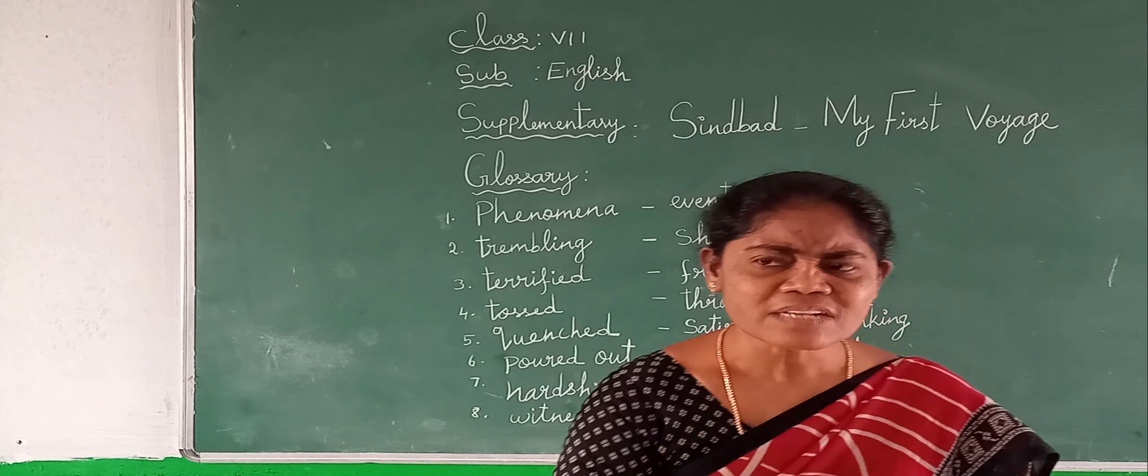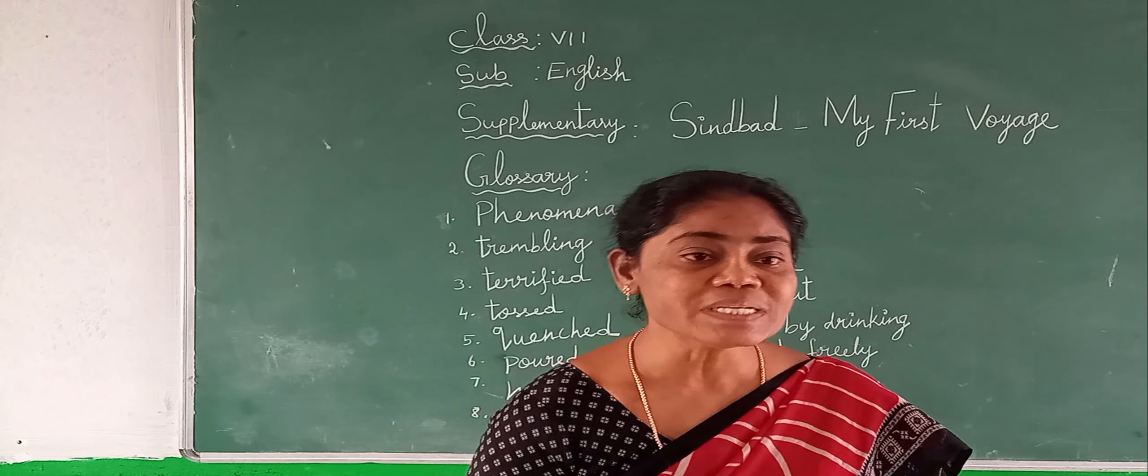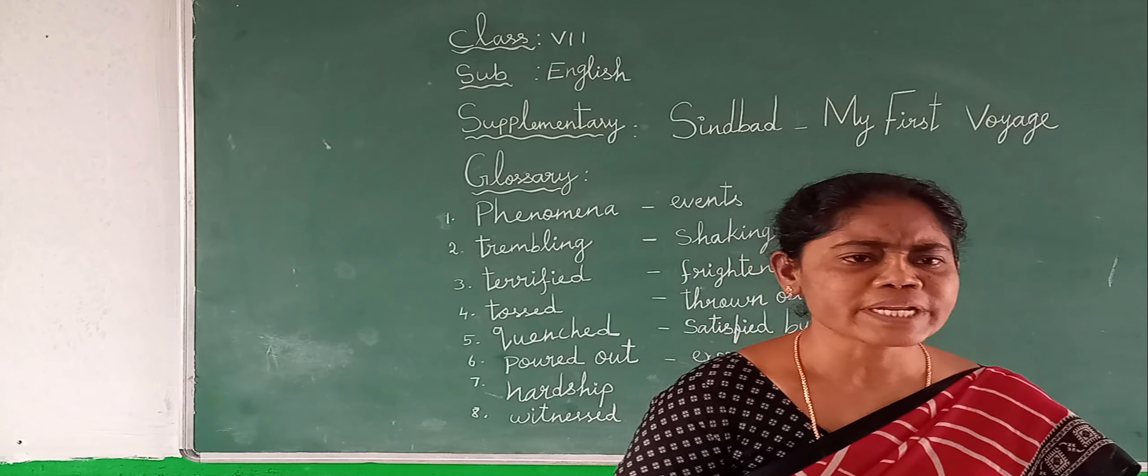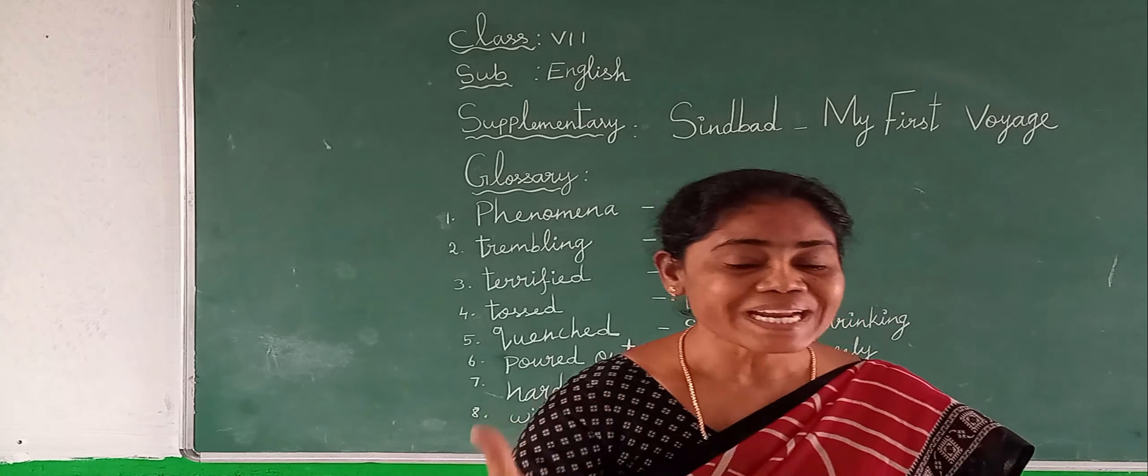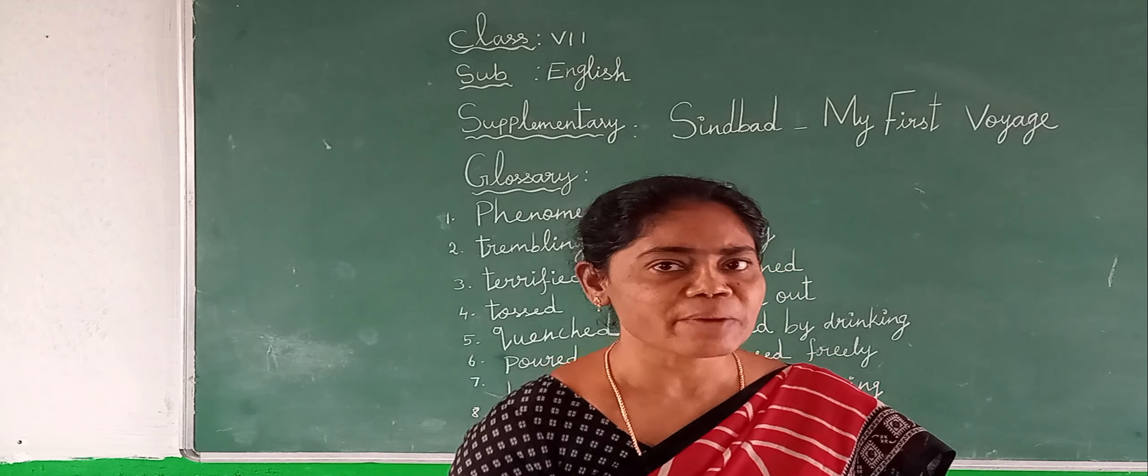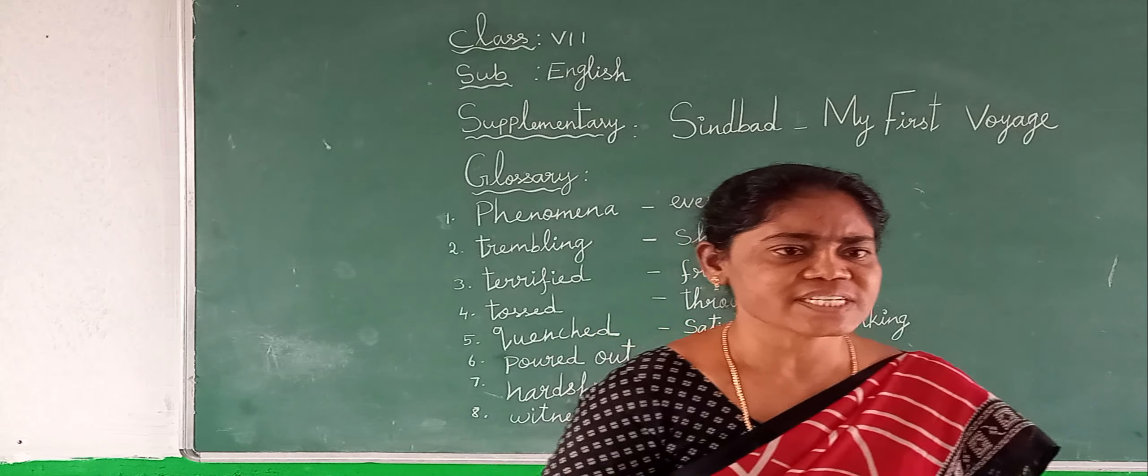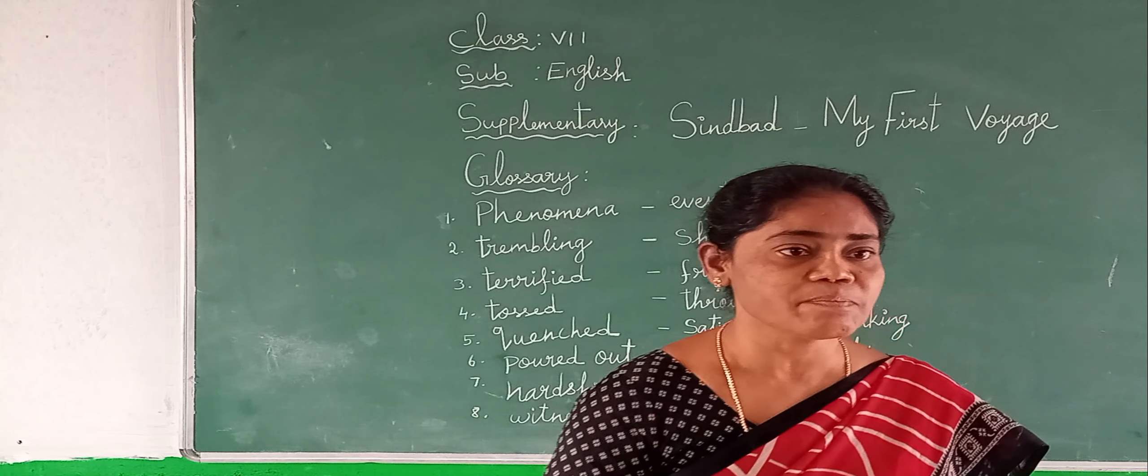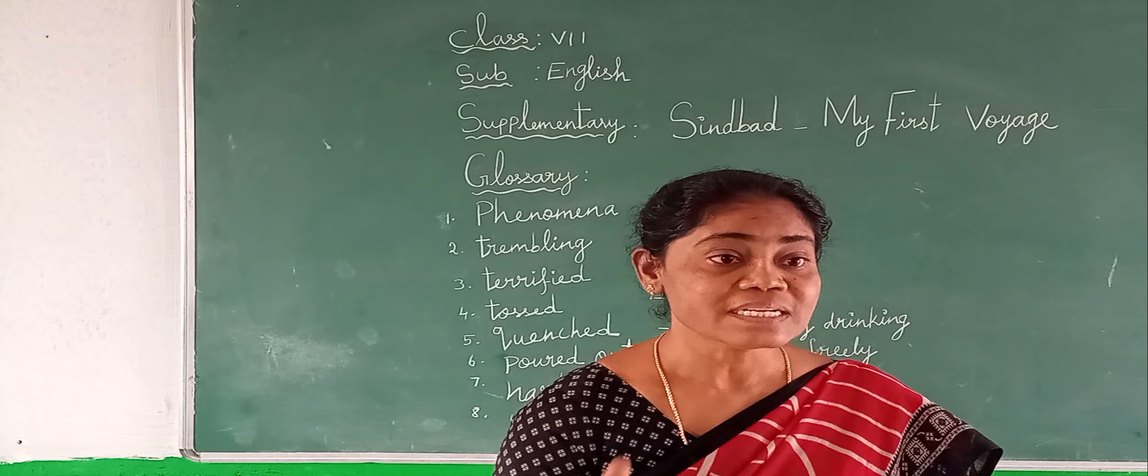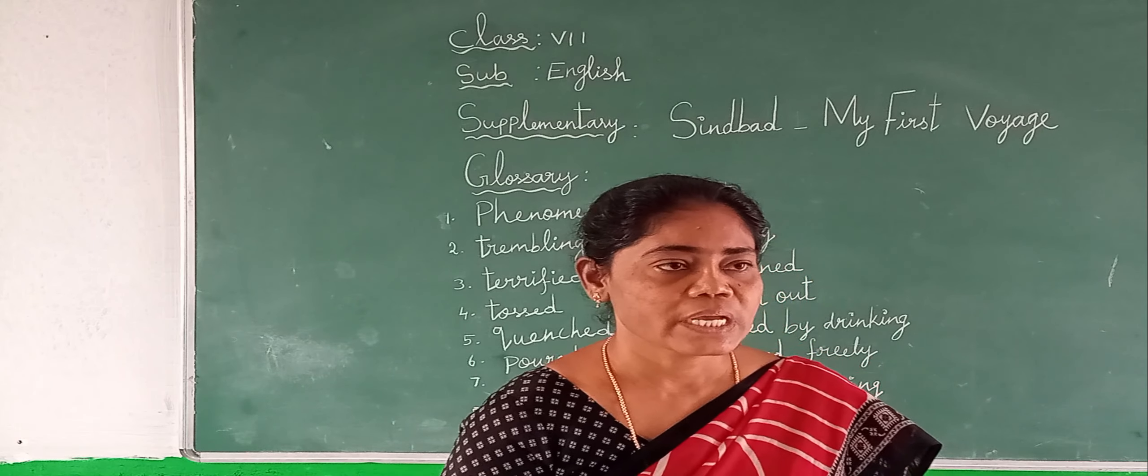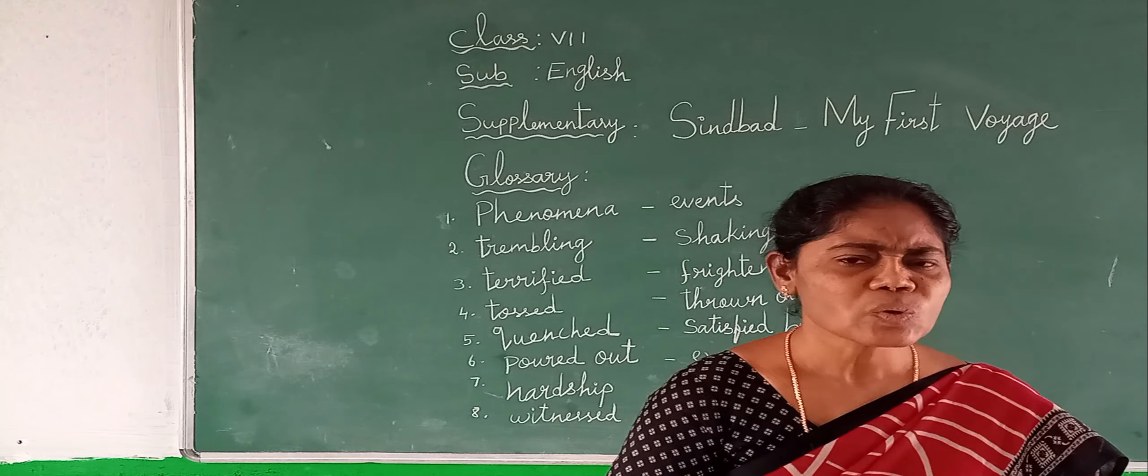In the course of the seven voyages throughout the seas, east of Africa and south of Asia, he has fantastic adventures. Adventures, adventurous means the risk and activities, strange one in magical reliance. Reliance means area, encountering monsters and witnessing supernatural phenomena. Phenomena means events.